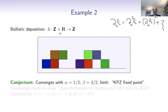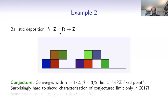Proving this is surprisingly hard. It seems like a very simple model with a clear conjecture of what the limit should be. But even writing down what the limit really is — characterizing the KPZ fixed point beyond giving the scaling exponents — was only done about three years ago.